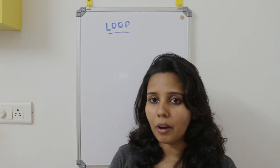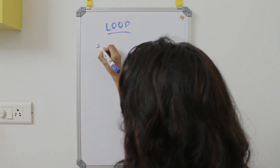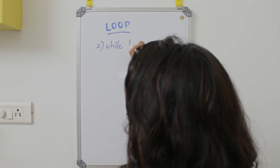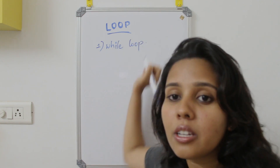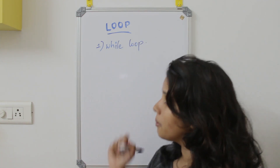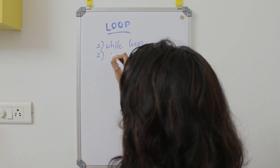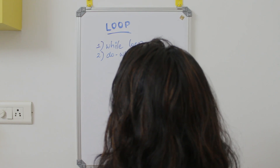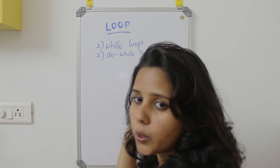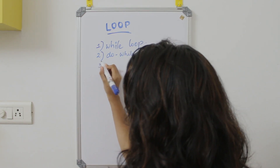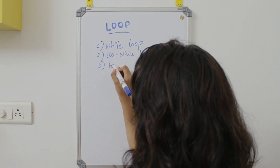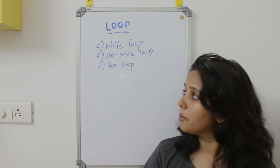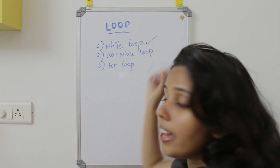The first loop is the while loop. The second one is the do-while loop. The third one is the for loop. So, we have to start with the while loop.